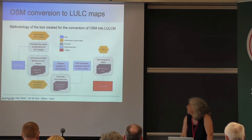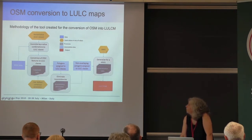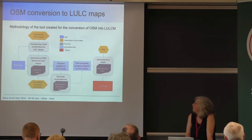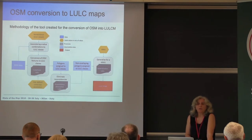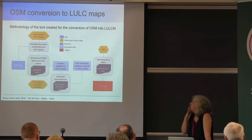Then there is a generalization process, which we have not yet done. MMU means minimum mapping unit, because some land cover and land use maps have this minimum mapping unit. If we want to compare our results with those maps, we should apply some generalization procedures, but we have not applied them yet.